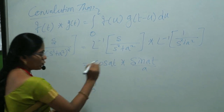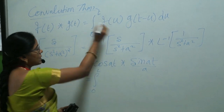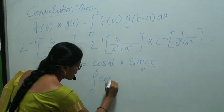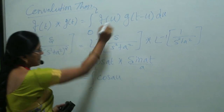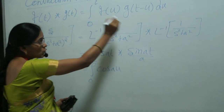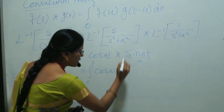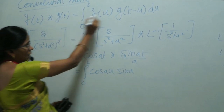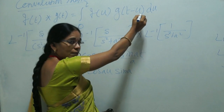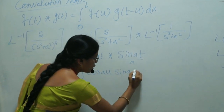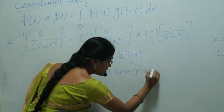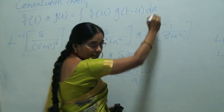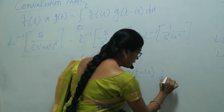Using the convolution formula, we write the integral from 0 to t. The first function with u substituted gives cos(au). The second function with t replaced by (t minus u) gives sin(a(t minus u))/a. So the integral is: integral from 0 to t of cos(au) times sin(a(t minus u))/a du.